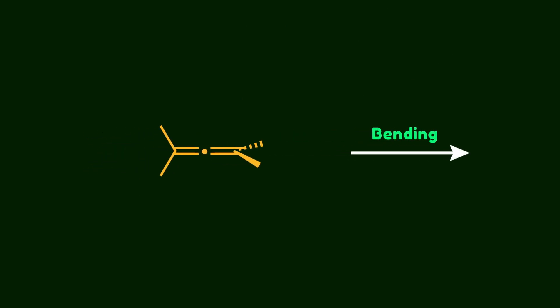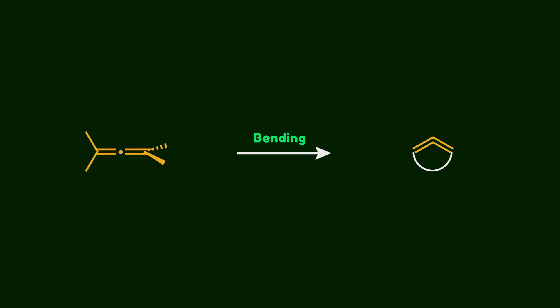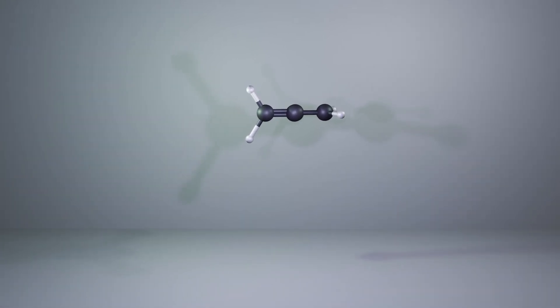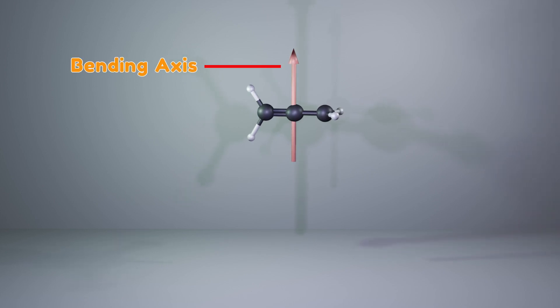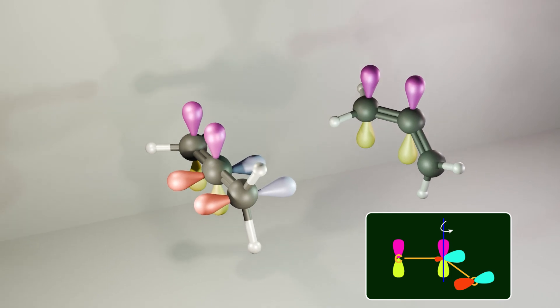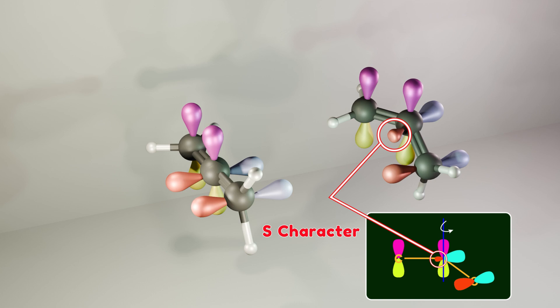Now let's explore what happens when a linear allene is bent. How does bending this linear building block change its properties? To answer this fundamental question, we need to take a deep dive into orbital interactions. We can define a bending axis that passes through the central carbon atom — the allene bends relative to this axis. There are two primary types of deformation that influence the electronic nature of the molecule. The first one is bending at the central carbon atom, where the allene group bends at the central carbon.